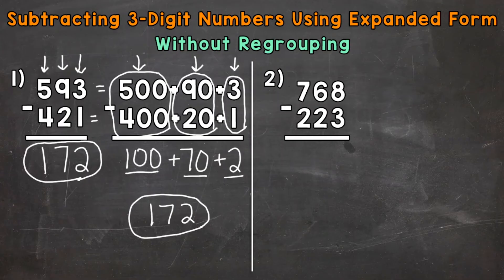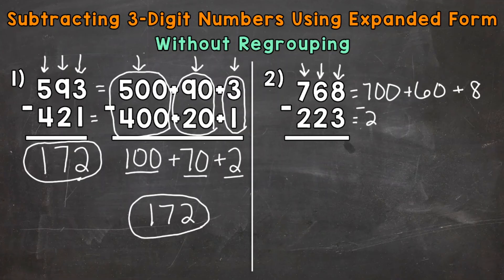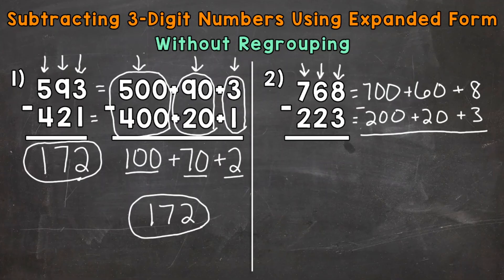Let's try another one and move on to number two. So we have 768 minus 223. First thing that we need to do is put these numbers into expanded form — show the value of each digit. The seven is in the hundreds place and has a value of 700, plus the six is in the tens so it has a value of 60, plus the eight in the ones has a value of eight. For 223: the two in the hundreds has a value of 200, the two in the tens has a value of 20, and the three in the ones has a value of three. Once we have both numbers in expanded form, we can subtract.